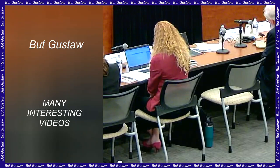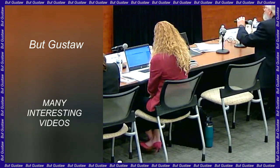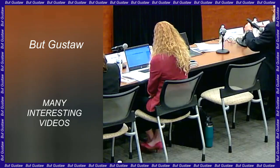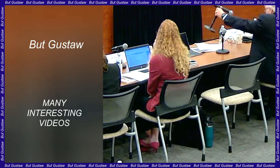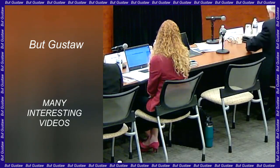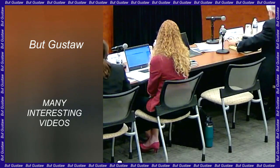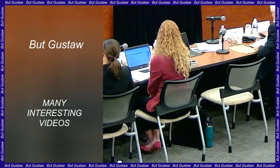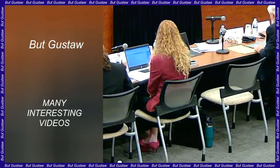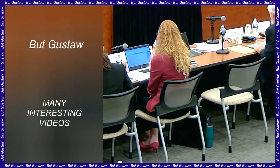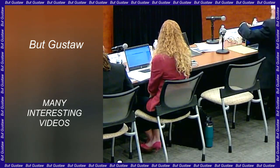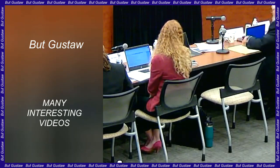Exoplanet 2M1510b was spotted during observations aimed at better characterizing the pair of brown dwarfs. These observations were performed with the Ultraviolet and Visual Echelle Spectrograph (UVES) on ESO's Very Large Telescope (VLT) at Paranal Observatory in the Chilean Andes.